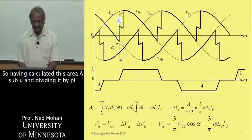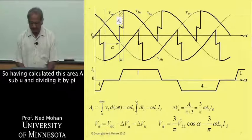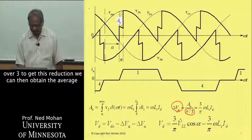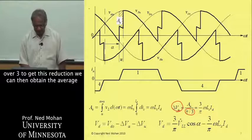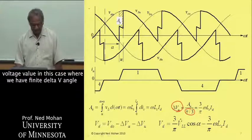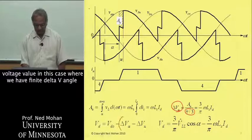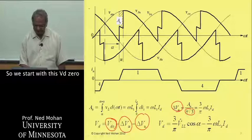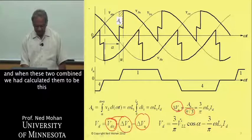Having calculated this area A sub u and dividing it by pi over 3 to get this reduction, we can then obtain the average voltage value in this case, where we have finite delay angle and finite commutation interval.